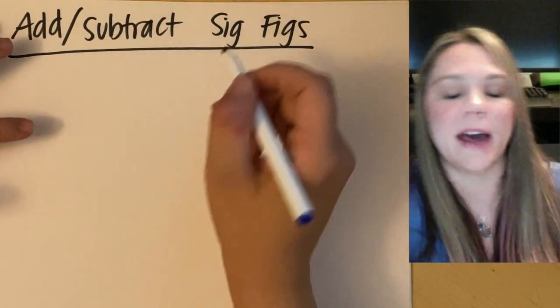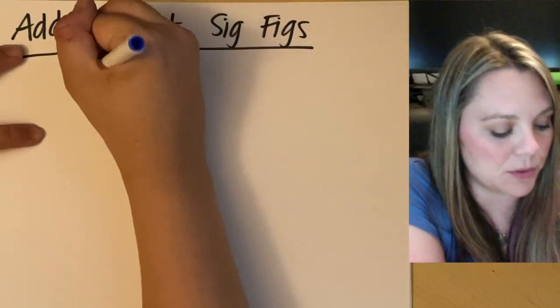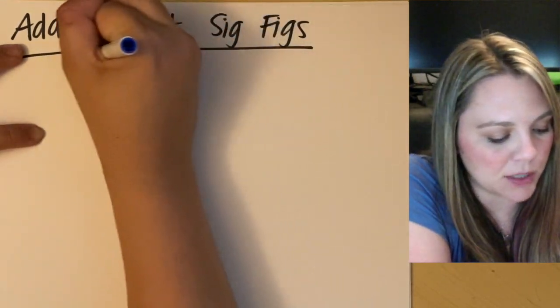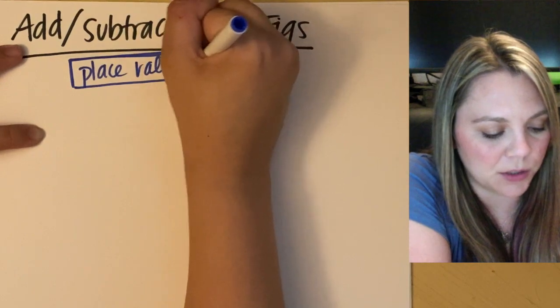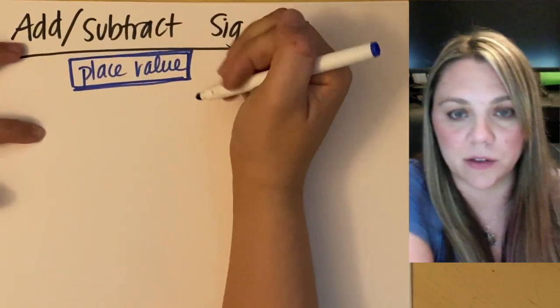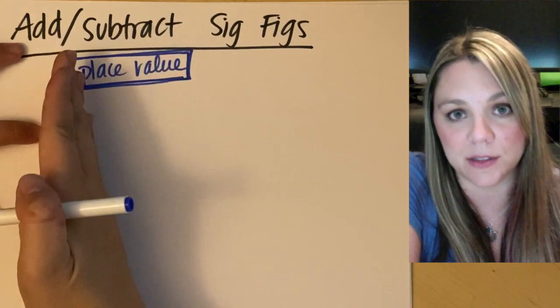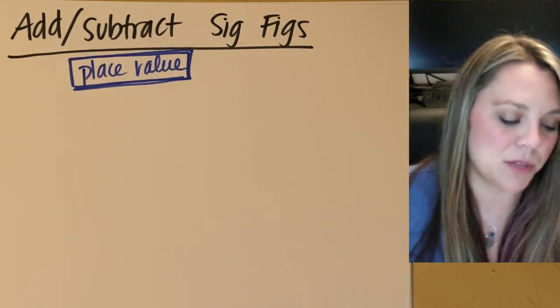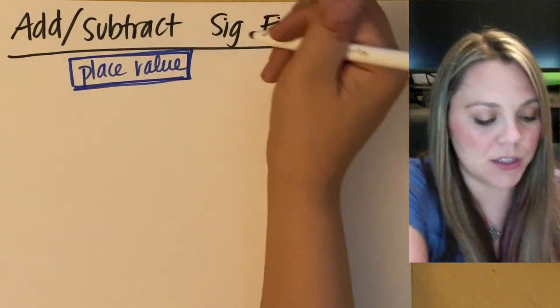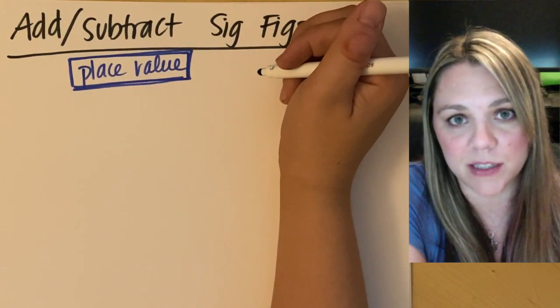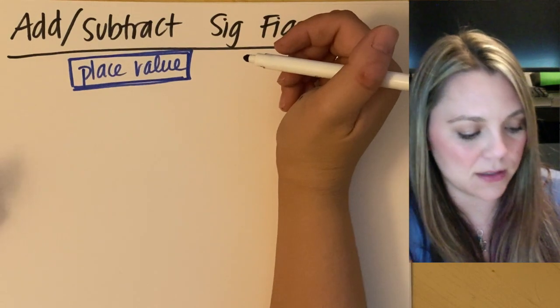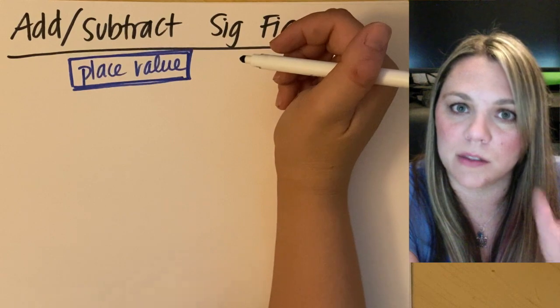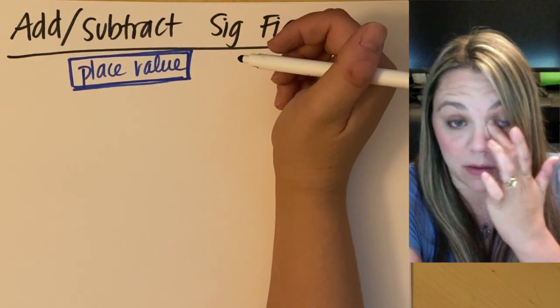The basic rule of adding and subtracting with sig figs has to do with place value. Remember way back in the day, we're talking elementary school, you learned about your place value, your ones place, your tens, your hundreds, your thousands, because we actually need to know that for adding and subtracting with sig figs. And you can never be in your answer of adding and subtracting more precise than what the smallest place value you had was, the least precise place value you had was.